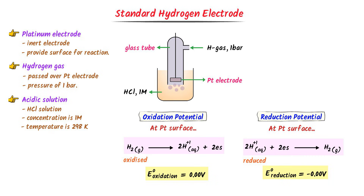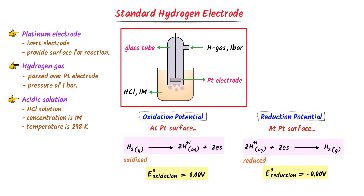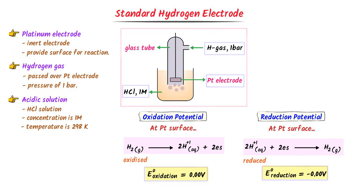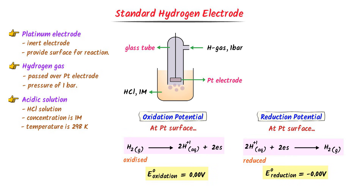Therefore, remember that the Standard Hydrogen Electrode is a reference electrode consisting of a platinum electrode in contact with hydrogen gas at 1 bar pressure, with an aqueous solution containing 1 M hydrogen ions at 298 K. We assume its electrode potential is 0.00 V. In the next video we will learn all about standard electrode potential.